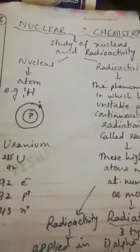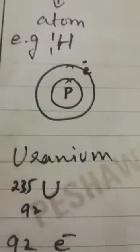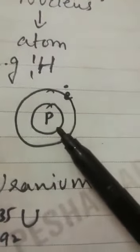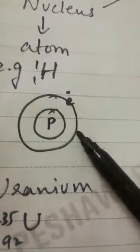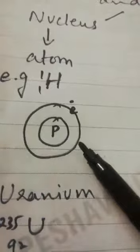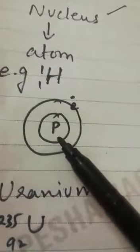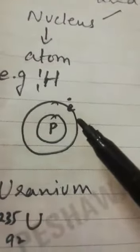The word 'nuclear' is taken from the word 'nucleus.' If you look at the structure of an atom, you know that the atom is the smallest particle of matter and it is composed of two main parts. The central part is called the nucleus while the outer part is called the orbit. The three major subatomic particles of an atom are proton, neutron, and electron. Protons and neutrons are present in the nucleus while electrons revolve around the nucleus in their specific paths called orbits.